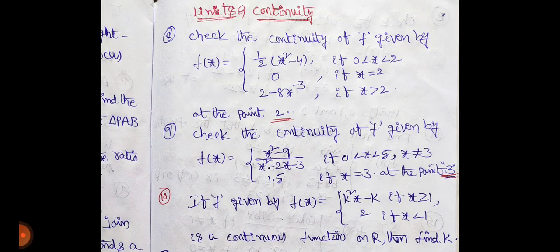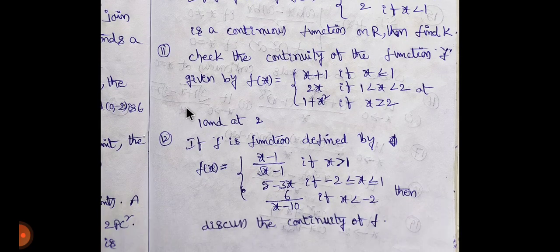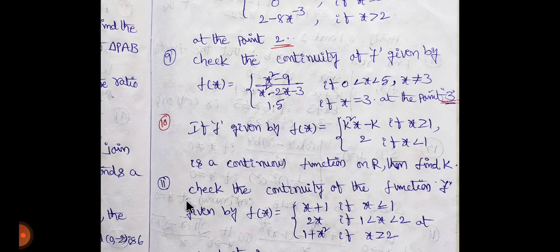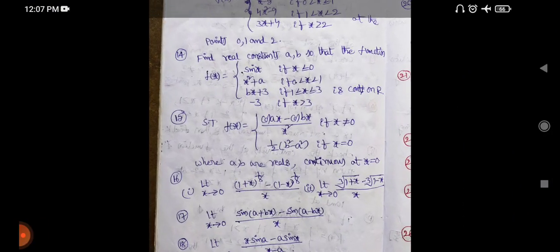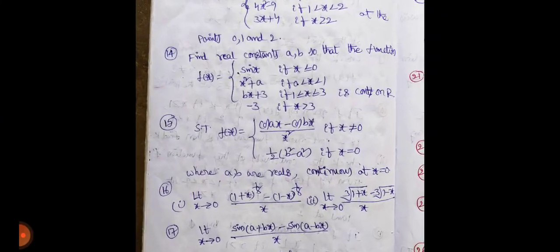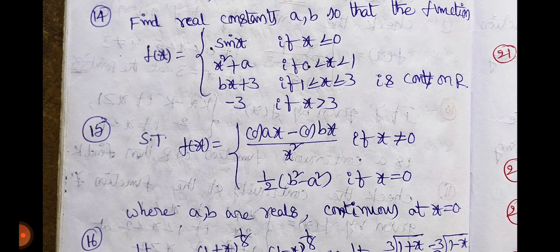7 models - compulsory 2 problems. Limits and continuity. Limits and continuity - guaranteeable. Continuity. Limits. Problem. Continuity - 4 problems. Left hand limit, right hand limit equal - continuity. Next one, continuity.